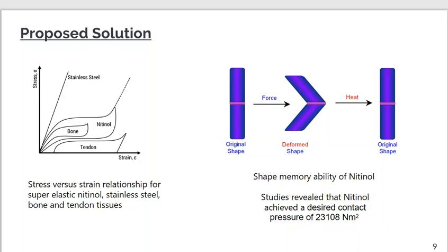The shape memory ability of Nitinol: when Nitinol is deformed due to heat, it goes back to its original shape. When used in braces, if there is hindrance to the Nitinol arc wire, it can generate stress up to 700 megapascals, which can help align the teeth to their desired position and achieves the desired contact pressure of 23,108 newtons per square meter in dental implants.